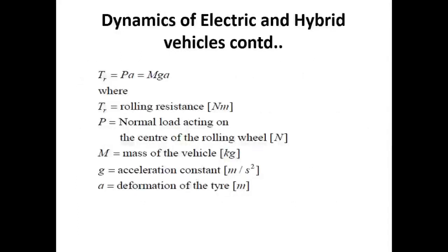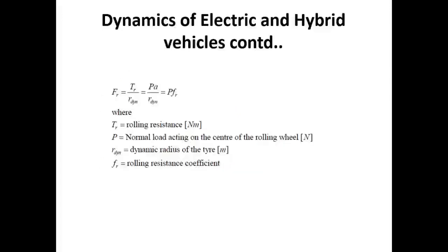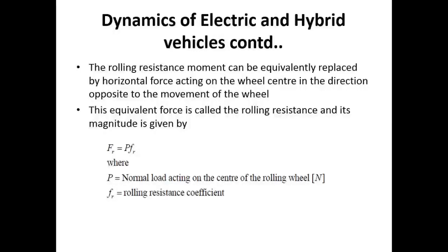The rolling resistance TR is equal to P × A, where P is the normal load acting on the centre of the rolling wheel in Newtons, and A is the deformation of the tire in meters. Capital M is the mass of the vehicle and G is the acceleration constant, so TR = PA = MG × A. From that, FR = TR / R_dynamic, where R_dynamic is the dynamic radius of the tire. The rolling resistance moment can be equivalently replaced by a horizontal force acting at the wheel centre in the direction opposite to motion. This equivalent force is called rolling resistance, and its magnitude is given by FR = P × f_r.